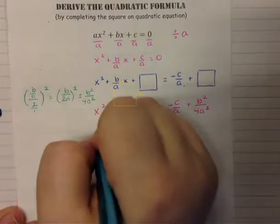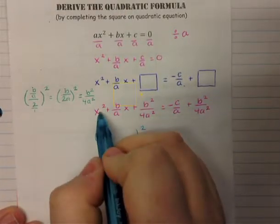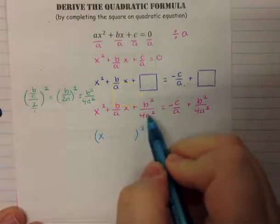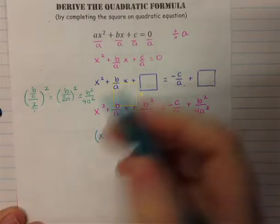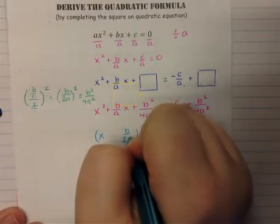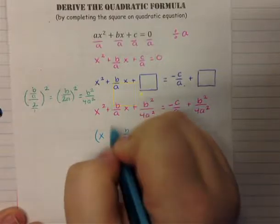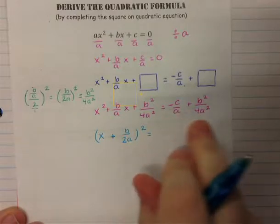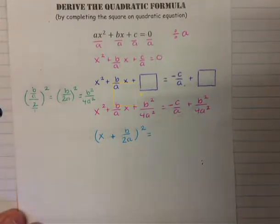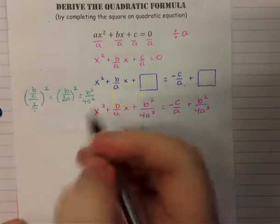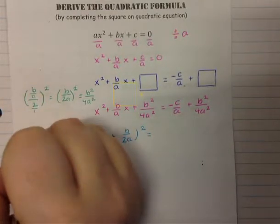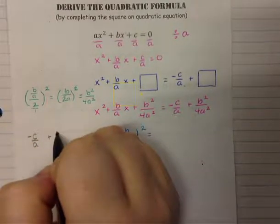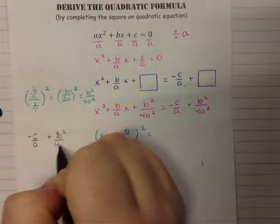When we factor the left side, it becomes a quantity squared. We take the square root of x², which is x, and the square root of b²/4a², which is b/2a — the same value we used. So the left side factors as (x + b/2a)² = -c/a + b²/4a². Now we have to combine those right-side fractions.